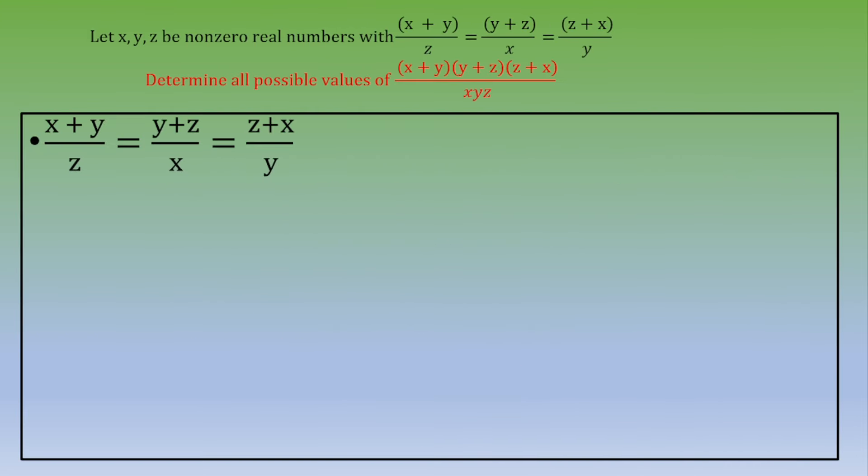The idea is to add one to each side of the equality. So you end up with (x+y)/z + 1 = (y+z)/x + 1 = (z+x)/y + 1.